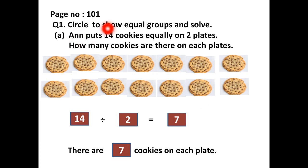Your page number is 101. Question 1 is circle to show equal groups and solve. How many groups will we make? Now we have to solve it. Ann puts 14 cookies equally on 2 plates. How many cookies are there on each plate?